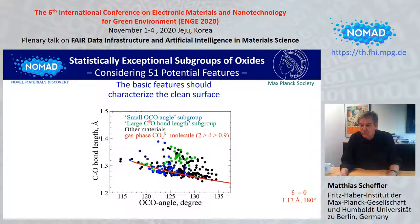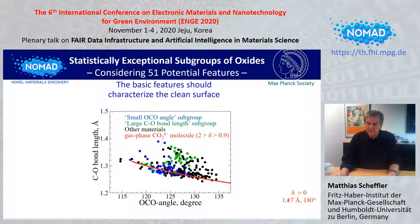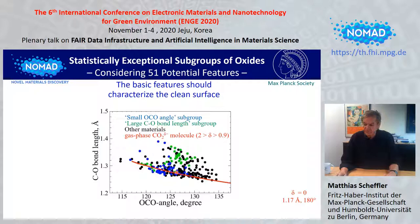Here you find our results. Blue is the small OCO angle subgroup and green is the large CO bond length subgroup, plotted as a function of the angle and the bond length. The free CO2 molecule has an angle of 180 degrees and a bond length of 1.17. If you charge it, the angle changes. In the free molecule, angle and bond length are clearly correlated — a straight line. On the surface, as you see from the data points, it is no longer correlated but distributed with significant width.